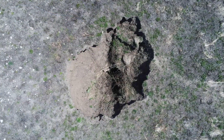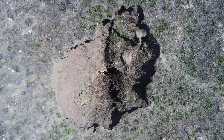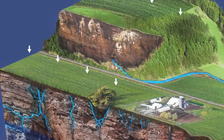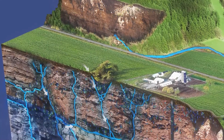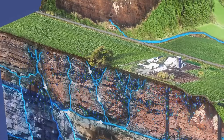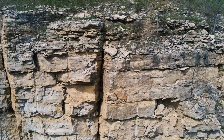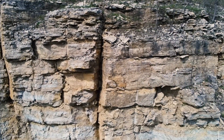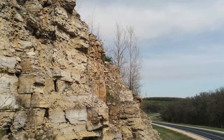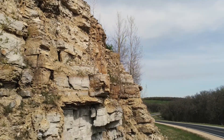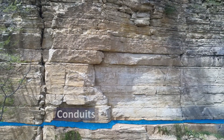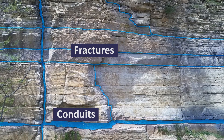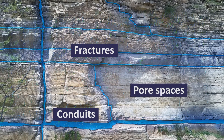While sinkholes are a dramatic feature in karst, most rain and snowmelt becomes groundwater not by flowing into sinkholes, but through infiltration into the ground and rock throughout the entire land surface. Over time, karst bedrock develops a variety of cracks and spaces that water can enter and move through at different speeds. There are three primary types of spaces in karst bedrock: conduits, fractures, and pore spaces. The size of these spaces dictates how fast groundwater can move.